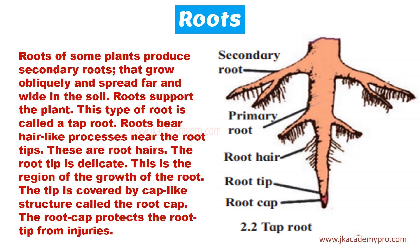The secondary roots bear hair-like processes near the root tips, called root hairs. The tip of the root is very delicate and soft; if it breaks it may harm the root system. Therefore, a cap-like structure grows over it, called the root cap, which protects the root tip from injury or damage.